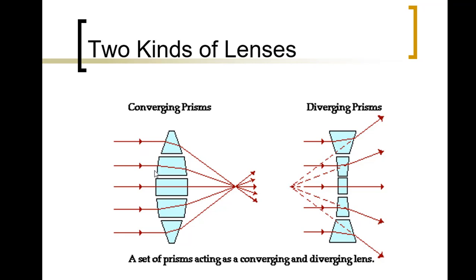If you have light rays coming through a convex lens, they will converge at a particular point — the focal point. But for diverging lens or concave lenses, light rays will diverge in different directions. A magnifying lens used to burn a paper or leaf with sunlight is an example of a converging lens, because the light rays converge.